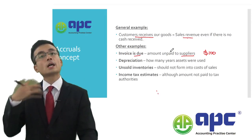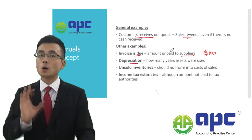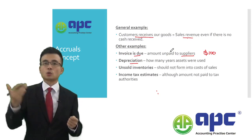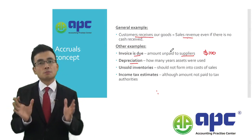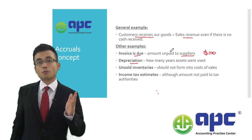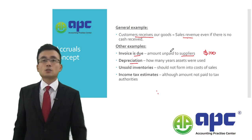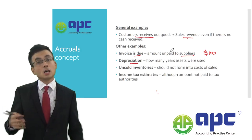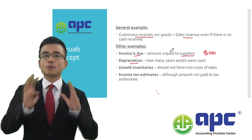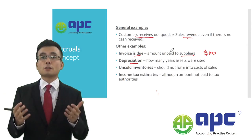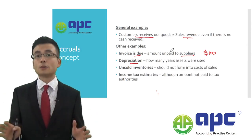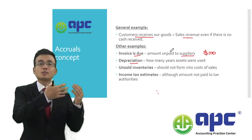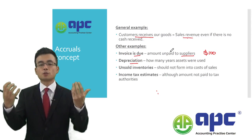Next example: depreciation expense. Depreciation is an accounting term showing how many years you've used your asset — it does not necessarily reflect a decrease in asset value or impairment. Simply put, if you bought an asset for $100 and it can be used for 10 years, you spread that $100 cost over 10 years as depreciation expense — $10 per year. This reflects the fact that the asset has been used for one year to generate revenue, and you match that cost against the revenue earned.